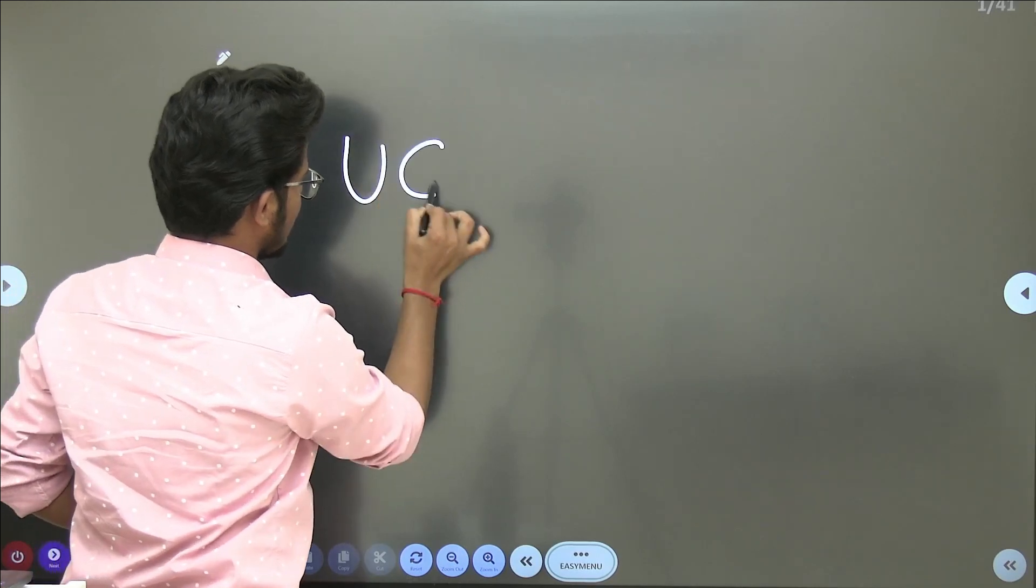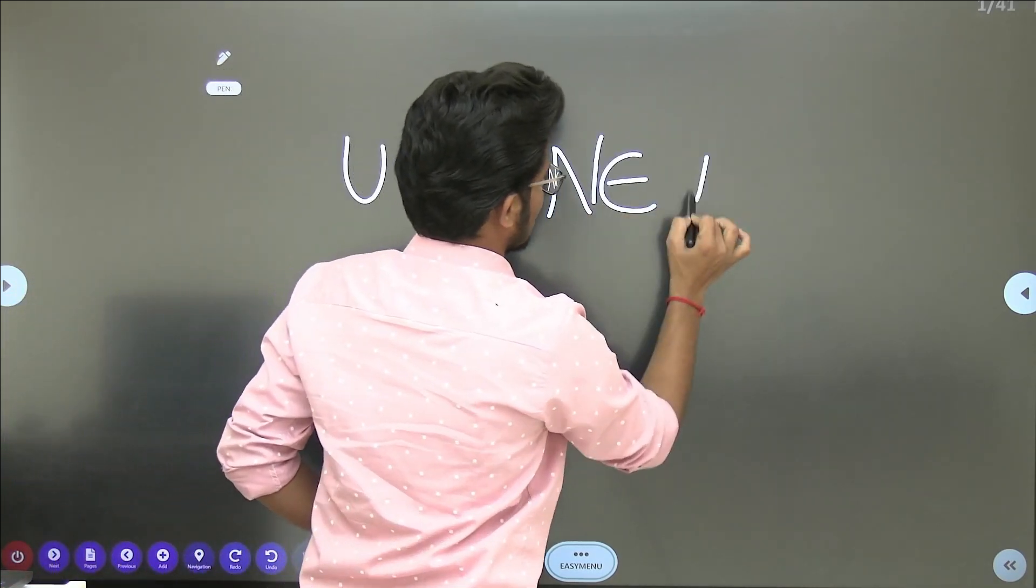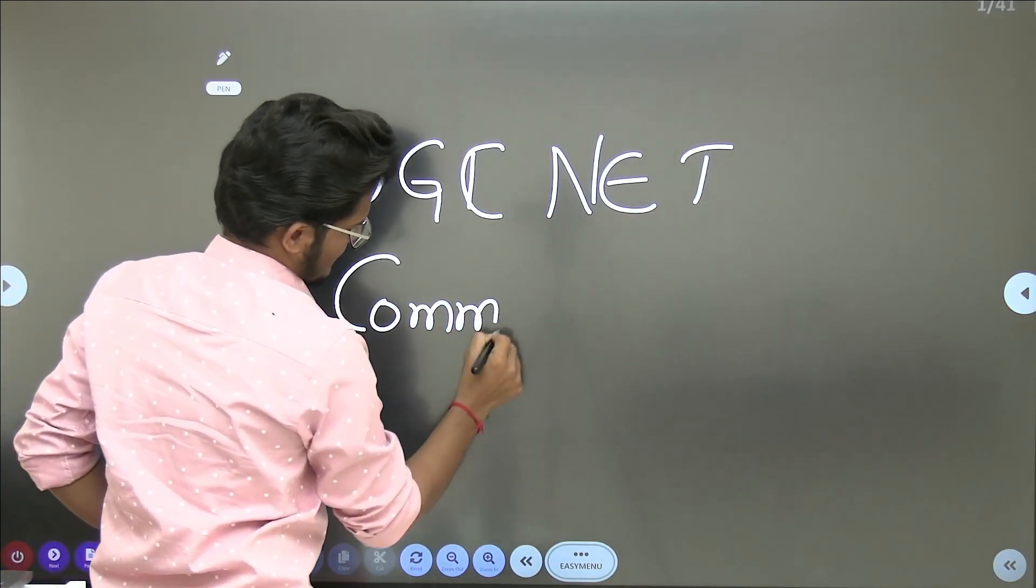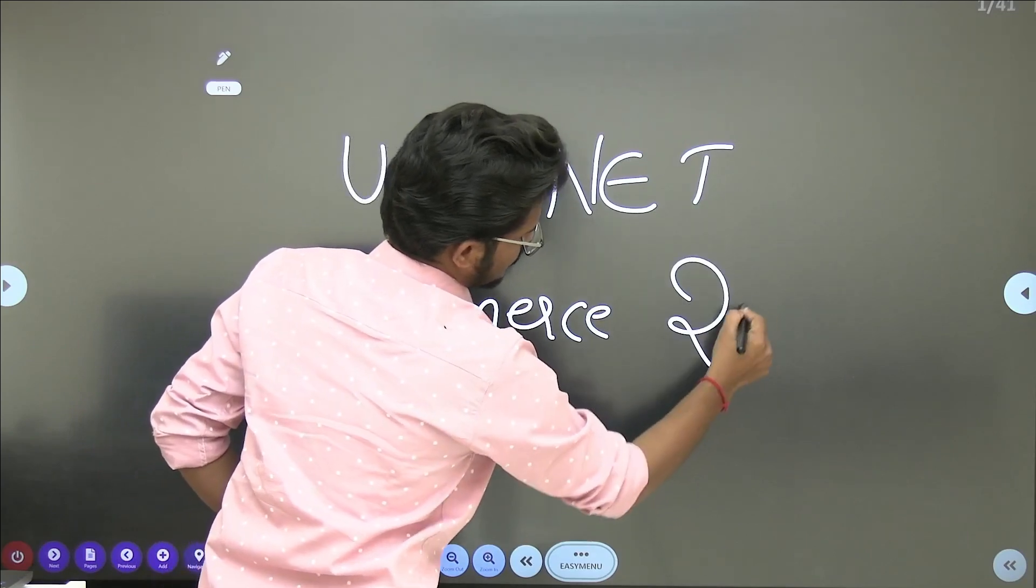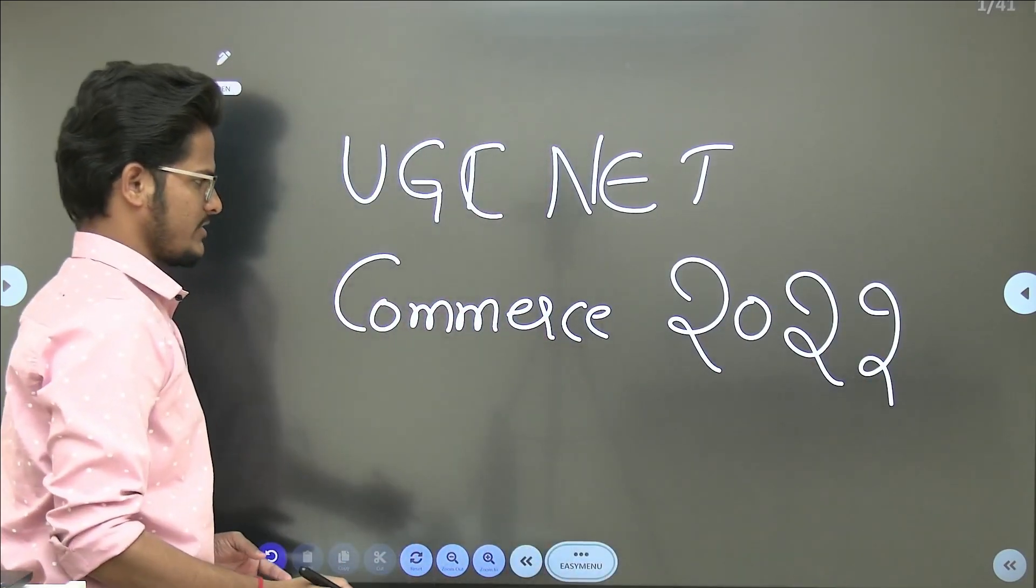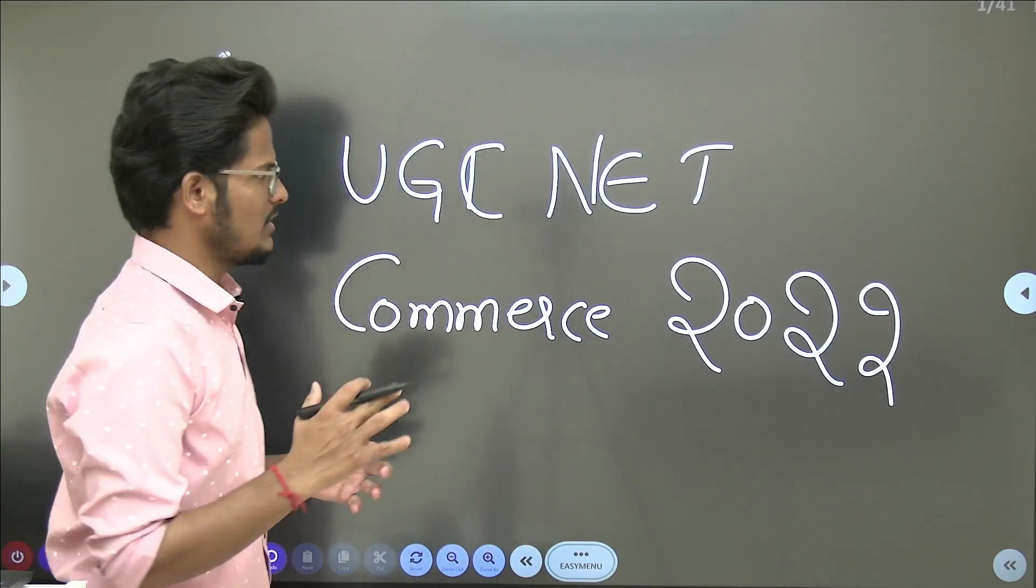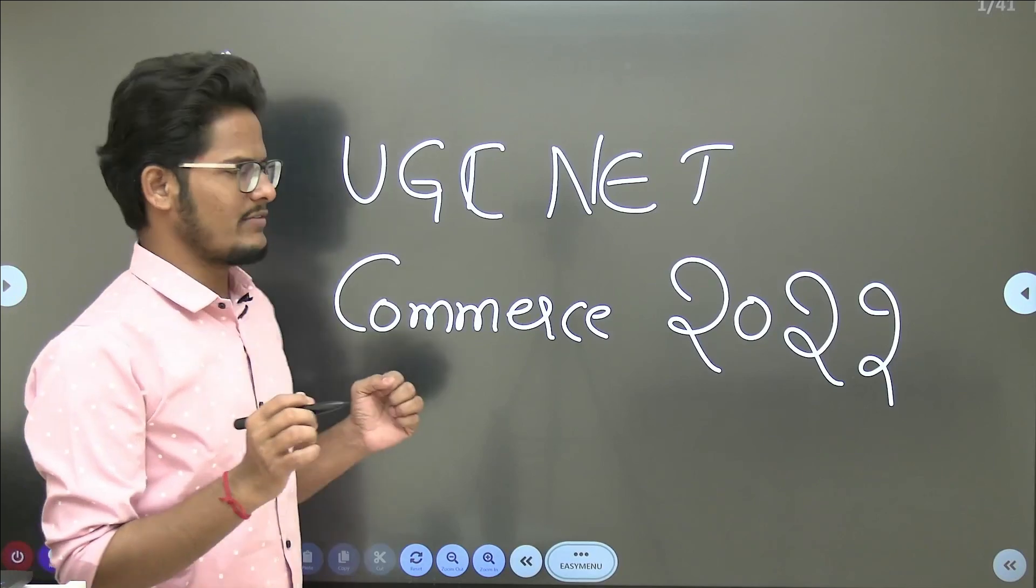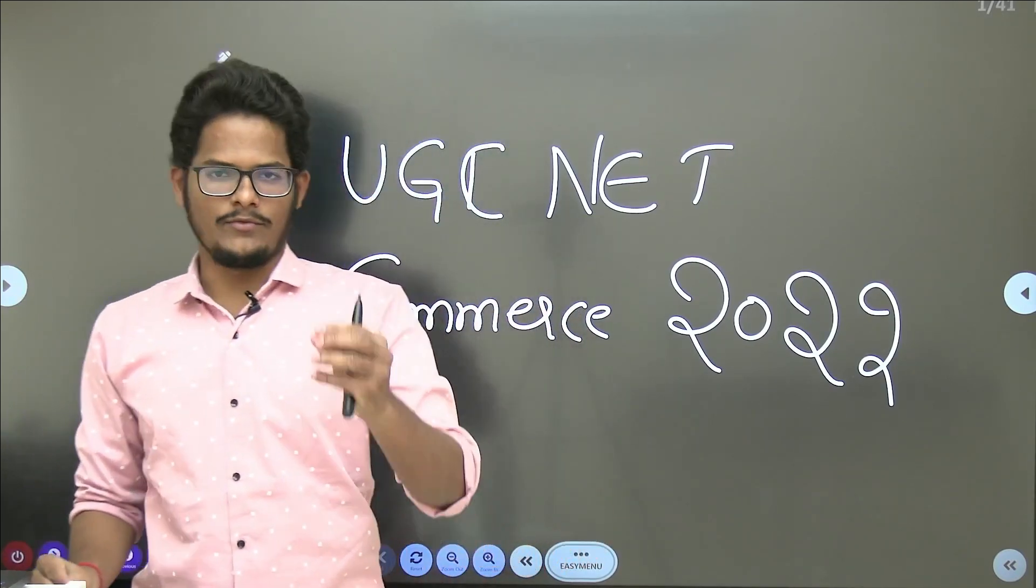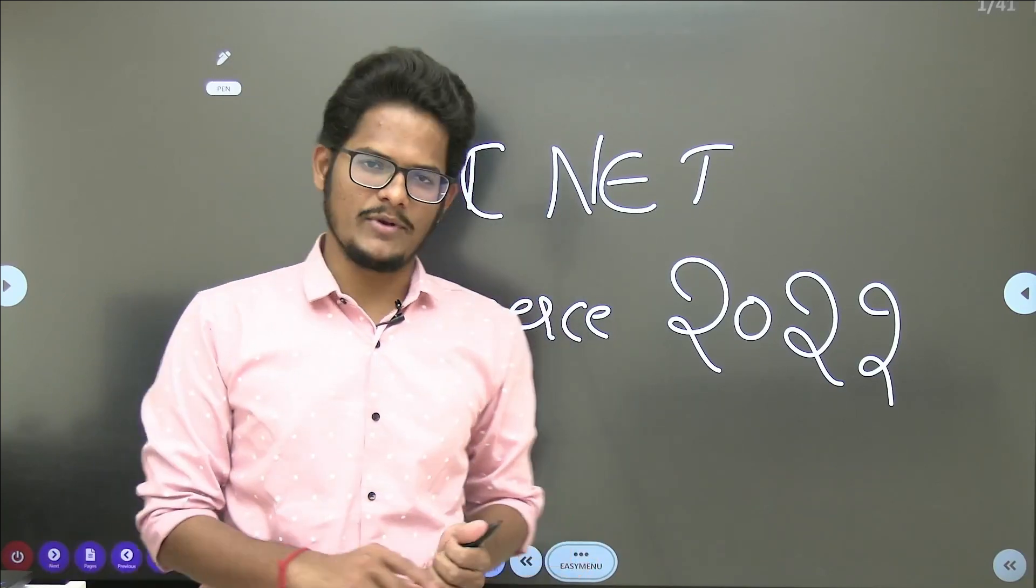UGC NET Commerce 2022 paper has three shifts, total 300 questions. We will try to cover as maximum possible. On a combined basis, I will be discussing one by one question with proper explanation. If you want me to put more videos, kindly subscribe and hit the like button.